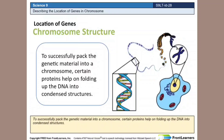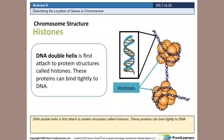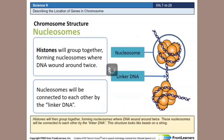To successfully pack the genetic material into a chromosome, certain proteins help in folding up the DNA into condensed structures. The DNA double helix is first attached to protein structures called histones. These proteins can bind tightly to DNA. Histones will then group together, forming nucleosomes, where DNA is wound around twice.